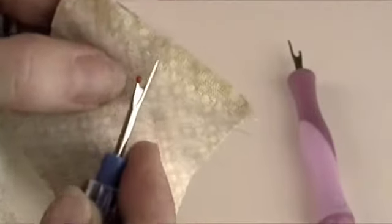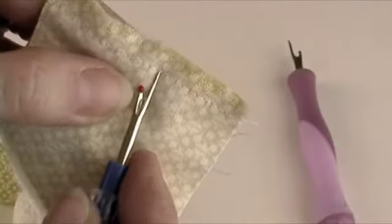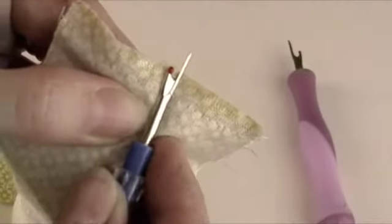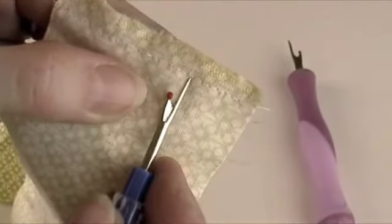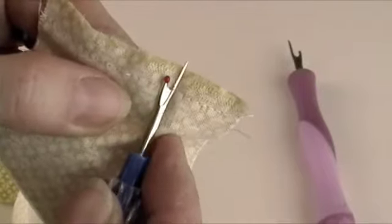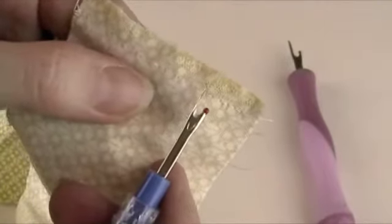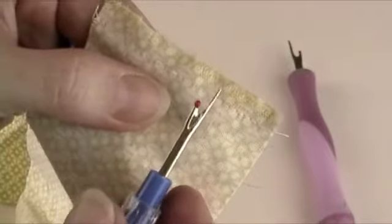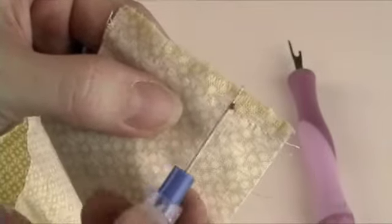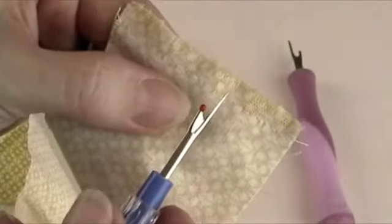As you're using your seam ripper, if you find that it does not easily cut the stitches and you have to force it a little bit—it should slide right through, hot knife through butter kind of stuff—if it doesn't do that, it's time to replace your seam ripper. They do not have an indefinite shelf life and really should be replaced at least once a year, depending on how often you sew.